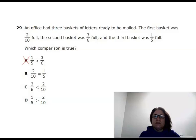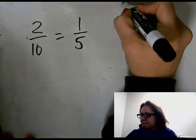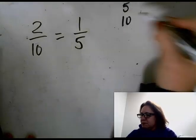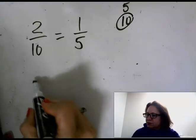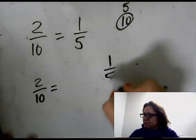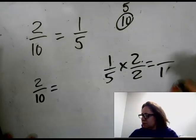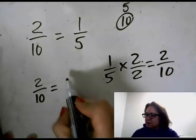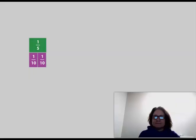Is two-tenths equal to one-fifth? Well, what's the lowest common denominator? Five, ten. So two-tenths equals, let's see, one-fifth times one, or in this case two-halves, gives us two-tenths. They are equivalent. That is true. So if you put B, give yourself a pat on the back. Good job.